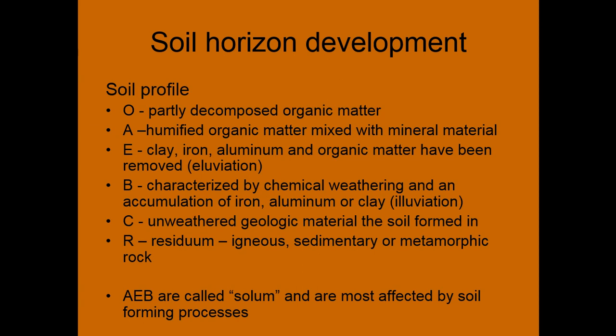O is our organic matter — not all soils have an O horizon. A is humus, or organic matter mixed with mineral material; think of something like a topsoil. E is our zone of leaching, or eluviation — these are often lighter in color. B horizon is characterized by chemical weathering, and is our zone of illuviation — all that stuff removed from our E horizon gets deposited into a B horizon.